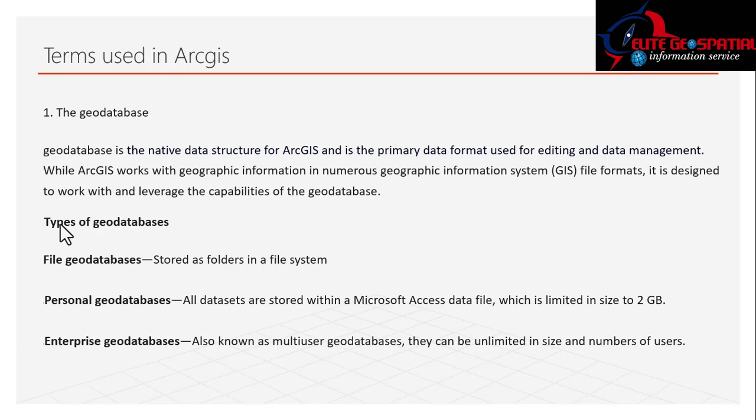The File Geodatabase stores data as folders in a file system. Its storage capacity matches your system — if your system has 10 GB, you can store up to 10 GB; if it has 1 terabyte, you can store up to a terabyte. It is effectively limitless as it uses your system's file storage.